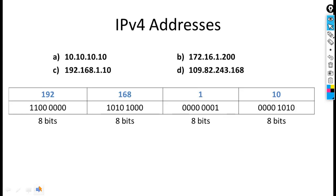Our topic is IPv4 addressing and subnetting. Four examples of IP addresses are written here — example A, B, C, and D. These IP addresses are in decimal form and this notation is called dotted decimal notation.